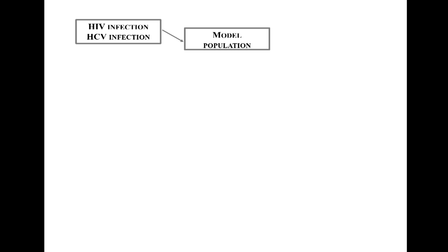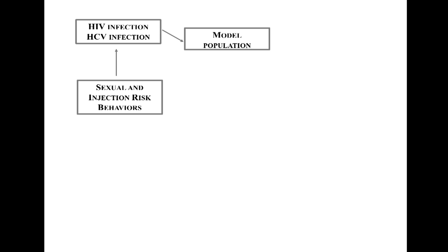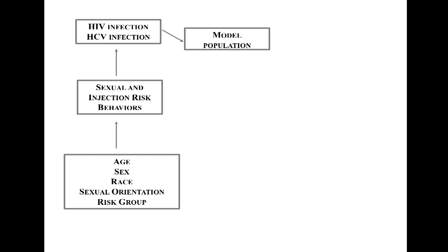We have individuals in our model, and ultimately we're really interested in figuring out what their risk of acquiring HIV and HCV would be. This is going to be dependent upon their risk behaviors — someone centrally located in an injecting network is going to be at much higher risk. Those risk behaviors are a function of a key set of characteristics. To every individual in the model, we assign them an age, sex, race, sexual orientation, and a risk group — so this might be someone who abuses drugs or specifically injects drugs, or doesn't use drugs at all. These assignments are made so that the model population as a whole is reflective of the demographics of Seattle.